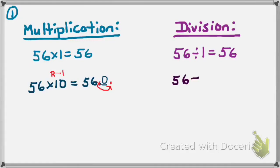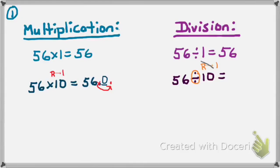But what if we had the problem 56 divided by 10? I start the same way I would for multiplication — I've done it in chapters 1, 2, 3, and 4. I say 10 is a power of 10 number, it has a 1 with zeros, and 10 is greater than 1, which means I move my decimal to the right. It has one zero, so I move it to the right one place. But then I focus on my operation, and it's not multiplication, it's division. Division is the opposite of multiplication, therefore I'm going to move my decimal in the opposite direction — not to the right, but to the left.